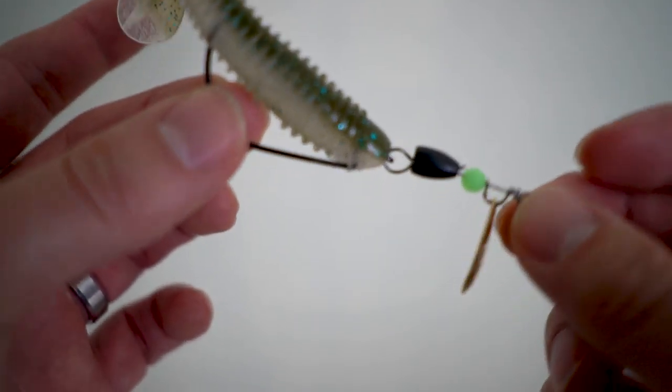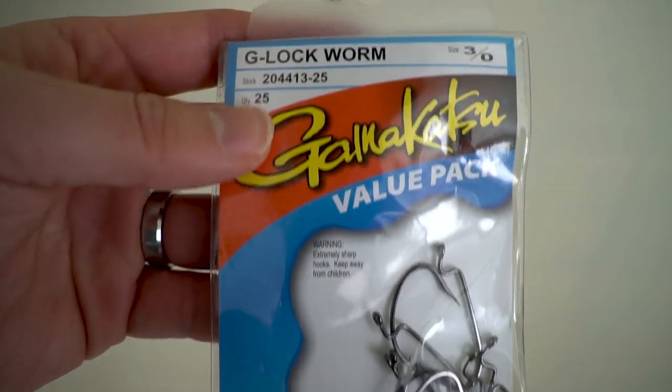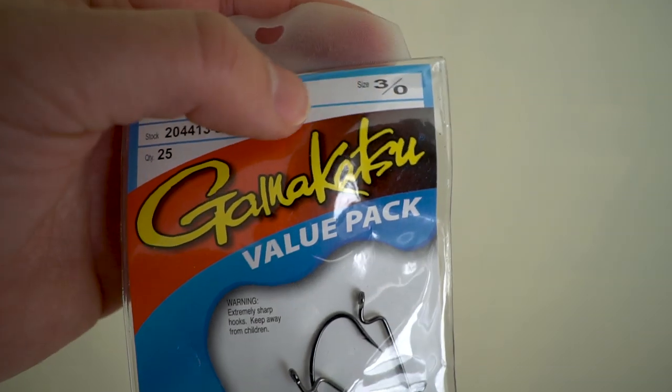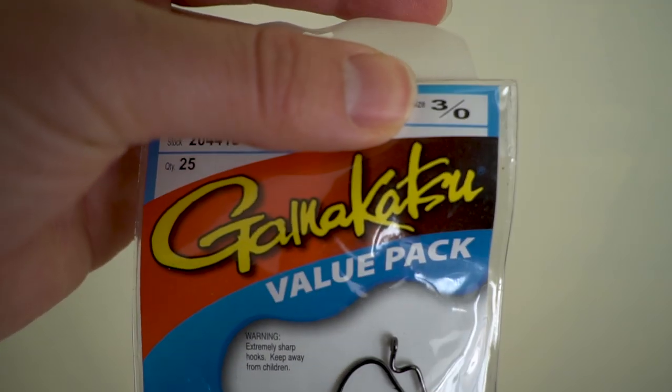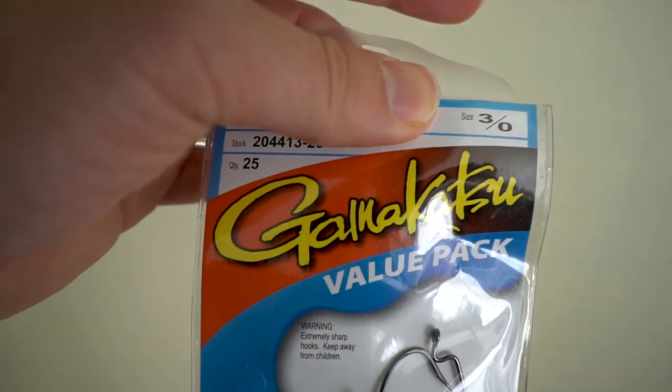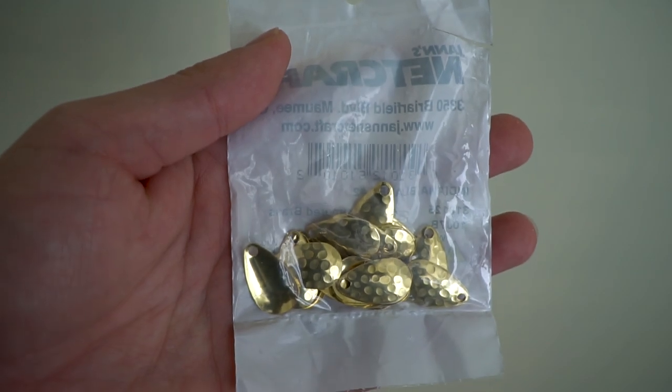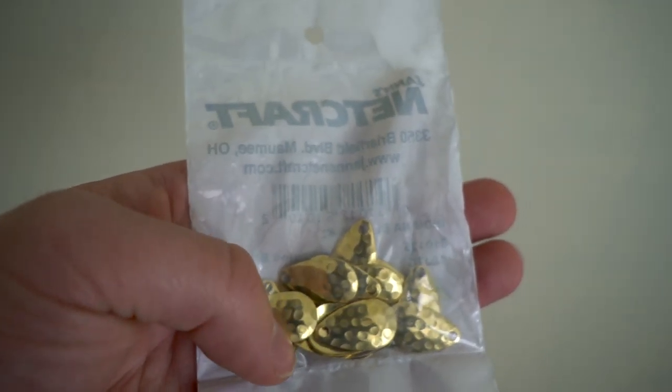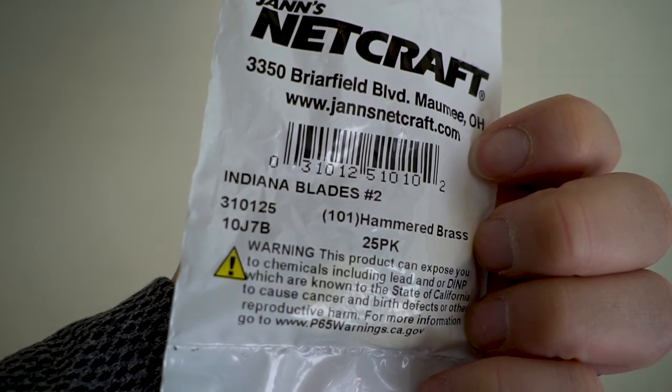Let's go over the materials we'll need. You need worm hooks - I'm using Gamakatsu G-Lock worm hook size 3.0. Pick the size for the lure you'll be throwing. I'll typically be throwing early spring K-Tex size 3.3 swing impact fat. You'll need a choice of spinners - gold, silver, hammered or not. I'm using gold hammered size 2 Indiana blades.